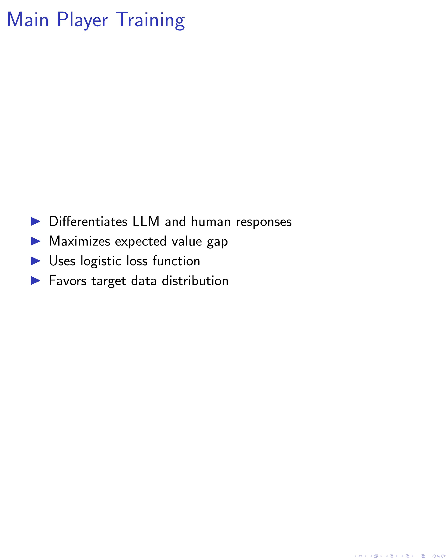We train the main player to differentiate between LLM responses and human responses. The objective function is formulated to maximize the expected value gap between the target data distribution and the opponent player's distribution. We use a monotonically decreasing and convex loss function, such as the logistic loss, to optimize the main player. This results in the main player's ability to assess the origin of responses, favoring responses from the target data distribution over those from the opponent player.